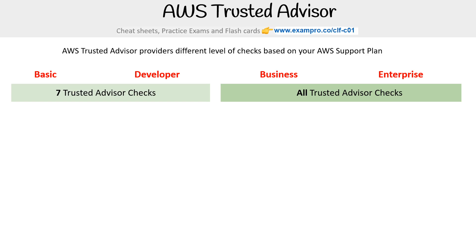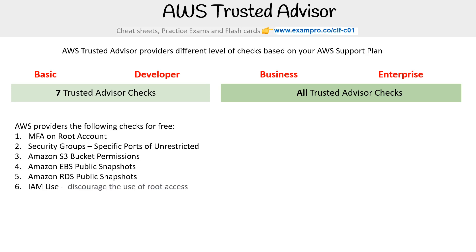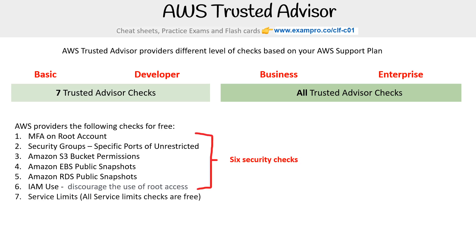The checks that come for free are: MFA on root account, security groups with specified ports unrestricted, Amazon S3 bucket permissions, Amazon EBS public snapshots, Amazon RDS public snapshots, IAM — discouraging use of the root account — and service limits, where all service limit checks are free. Notice that checks one through six are all security checks — you're not getting anything from the other tiers, just the security tier.